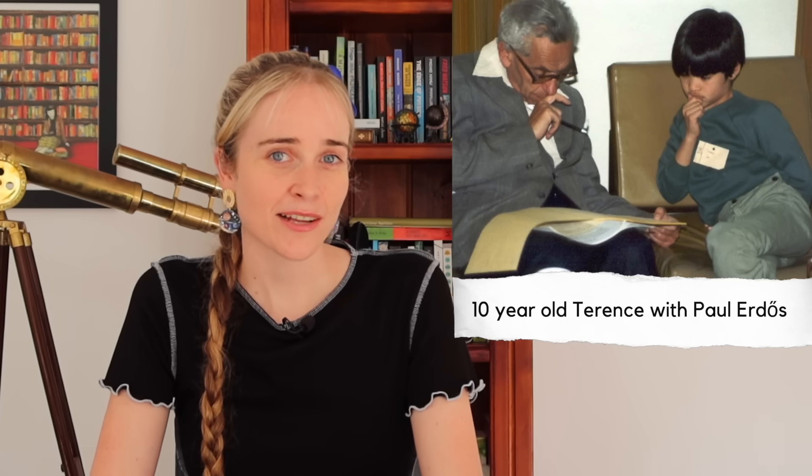Terence Tao is one of the world's best mathematicians. He has won math's top prize, the Fields Medal, and many would consider him a genius. His talents were recognized early, and he was a child math prodigy. He was dabbling in university courses when he was nine, and by 16 he had graduated from Flinders University in Adelaide. By 21 he had his PhD from Princeton.